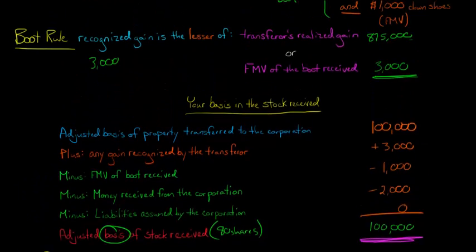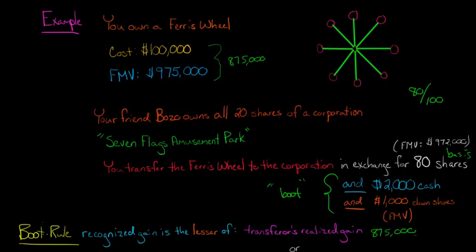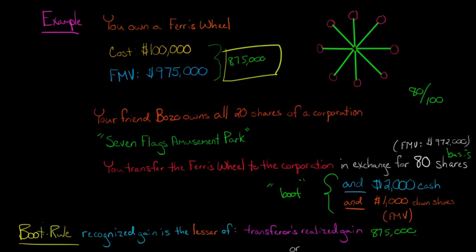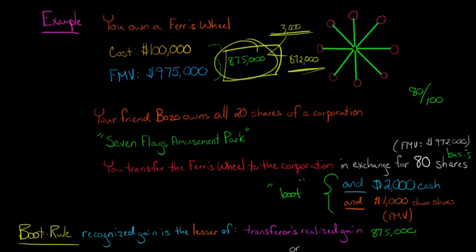Going back to the original property — a Ferris wheel with a cost of $100,000 and fair market value of $975,000 — that property had appreciated by $875,000. Do you get tax forgiveness on that $875,000 by doing this transaction? No. When we did the transaction, we recognized $3,000 of gain from boot. And hypothetically, if you sold all 80 shares after the Section 351, you'd have an $872,000 gain. Add those together: $872,000 plus $3,000 equals $875,000. So Section 351 is not tax forgiveness — it's tax deferral. You will eventually be taxed on that $875,000 of appreciation.